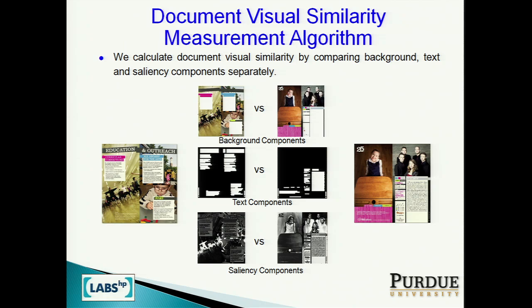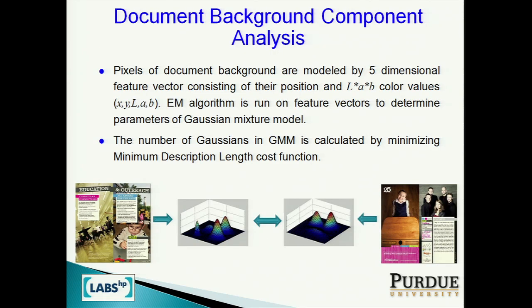Our approach to this problem is basically comparing documents with respect to three different components: background, text, and saliency. The background component is where we have the background without text — we erase all the text from the background. We then extract feature vectors from every pixel of the document. These are five-dimensional vectors: xy position of a pixel, and LAB color values.